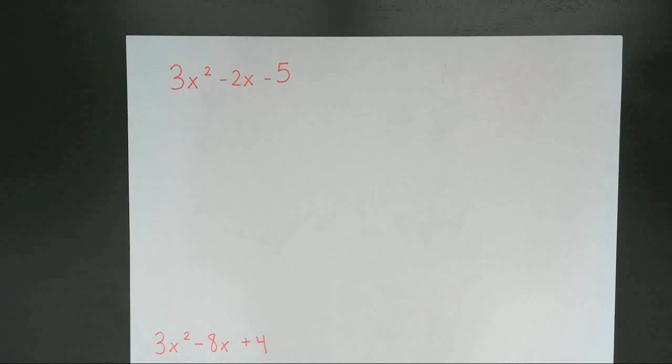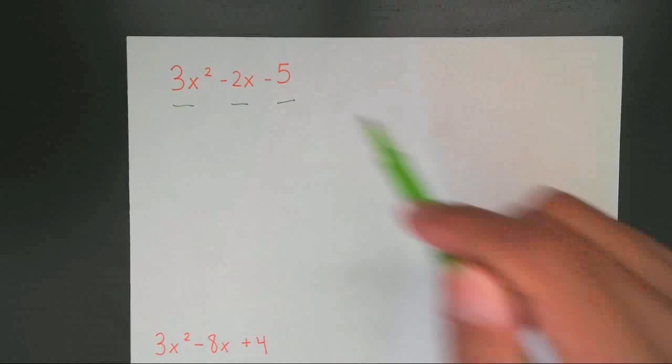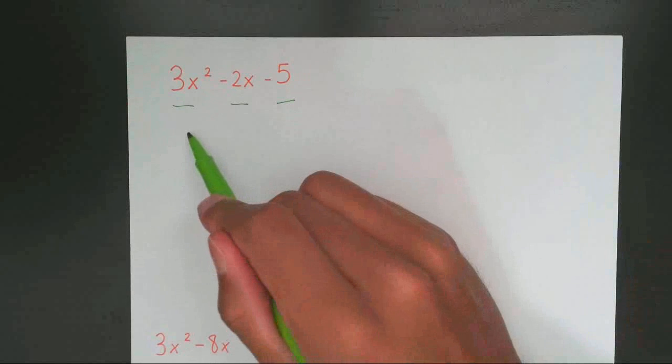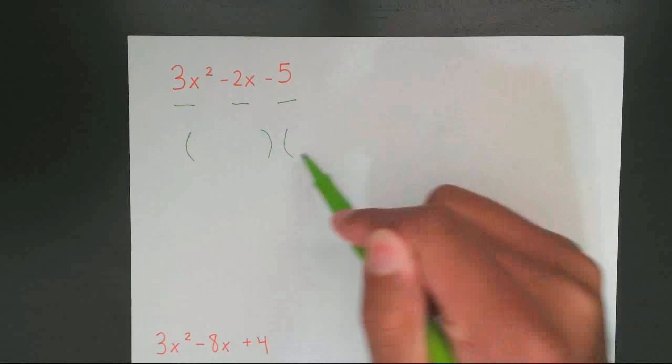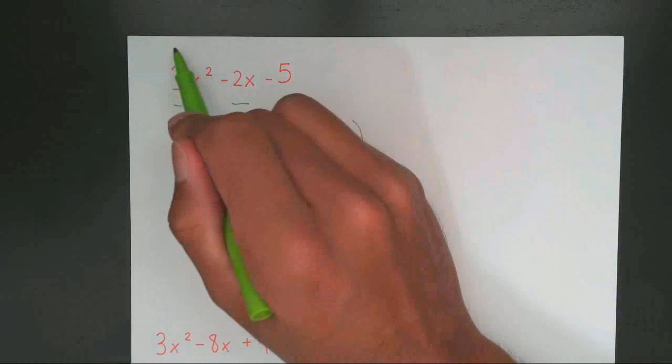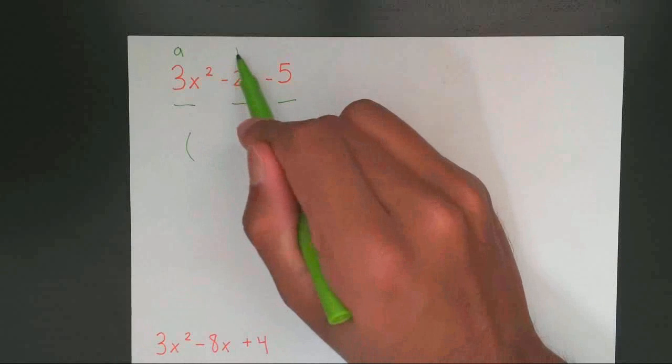Well the first thing we always do when we're factoring is count the number of terms. 1, 2, 3. So the second that there's three terms I automatically know that I'm factoring by two parentheses. Now the unique thing about this type of problem is you have a number in front of x squared which we're going to label it as a, b, and c.